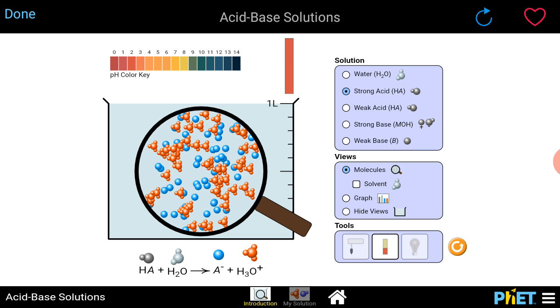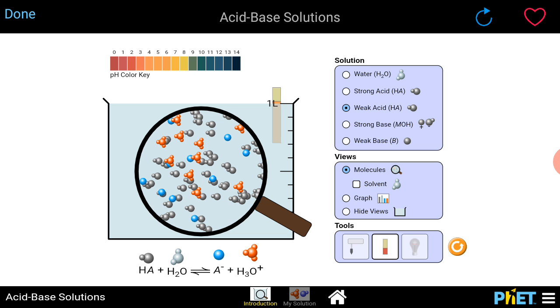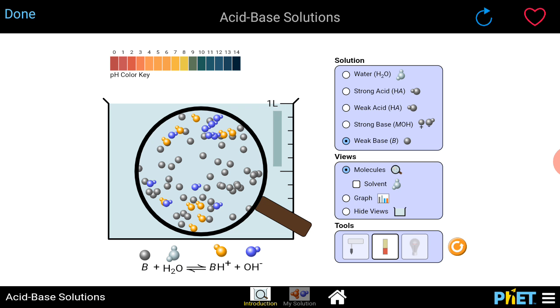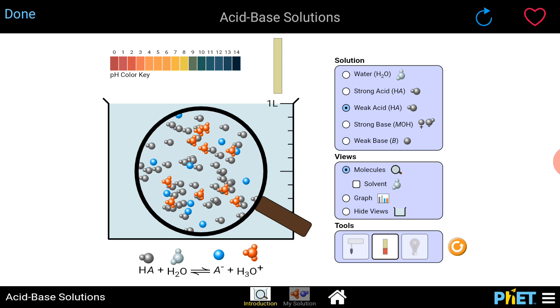Now what happens if we put it in the weak acid? It turns golden brown like the water, but much, much darker. Now the pH level is at 4.5, 50 pH.